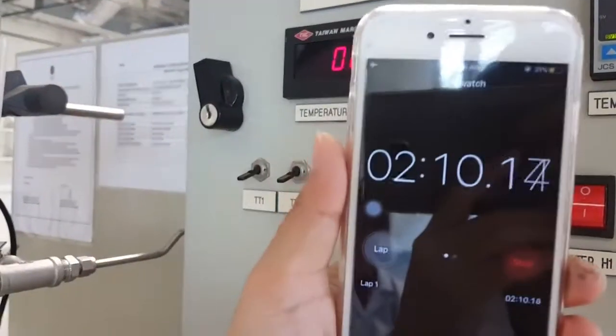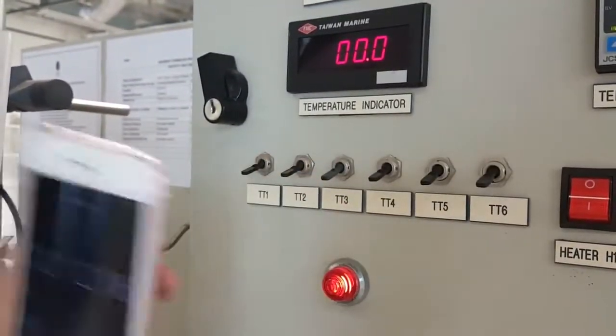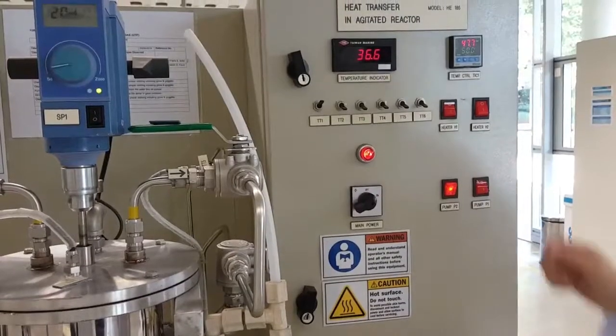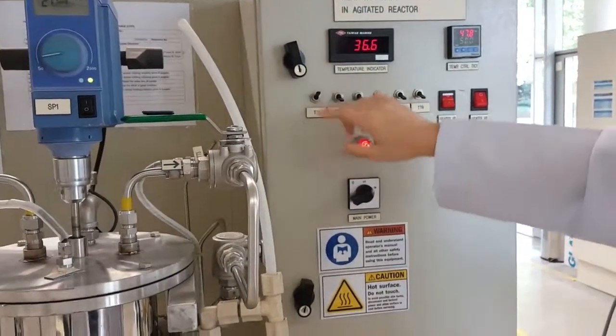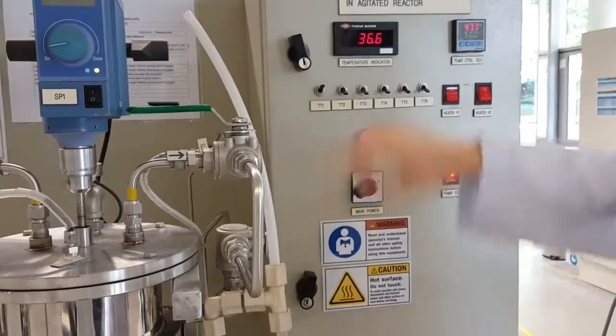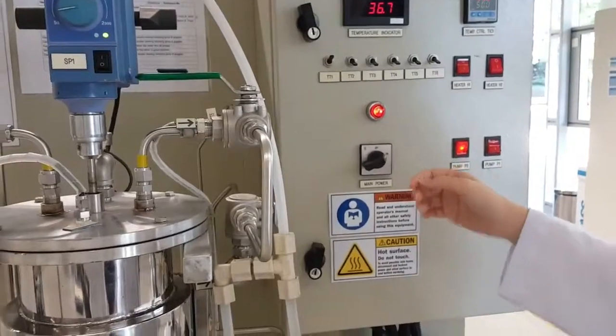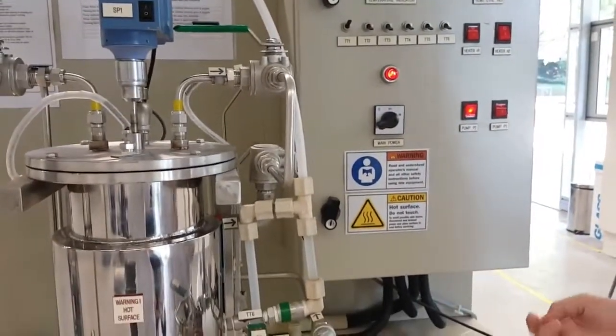We will now repeat taking the reading for every 2 minutes until TT1 is stable. Now, we have come to the end of the first experiment where we have heated the water up to a certain temperature. And now, we will use the hot water to let it cool down for the second experiment.